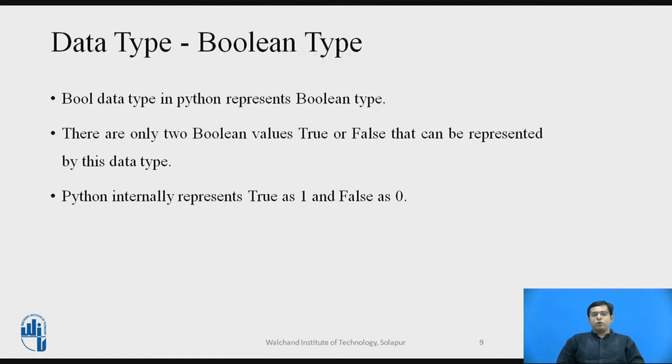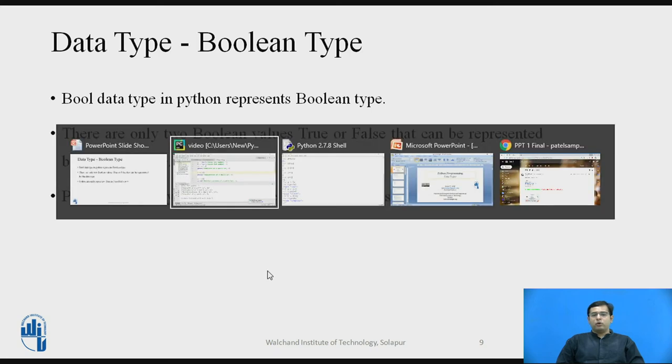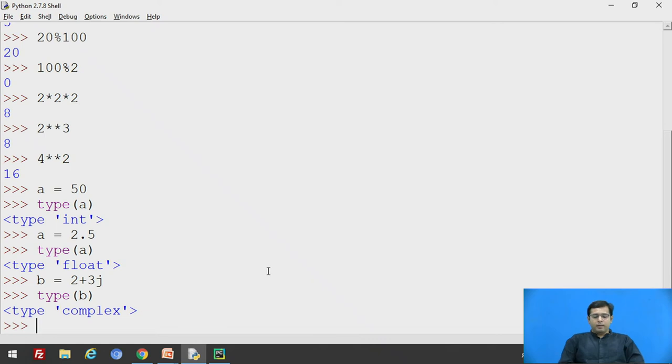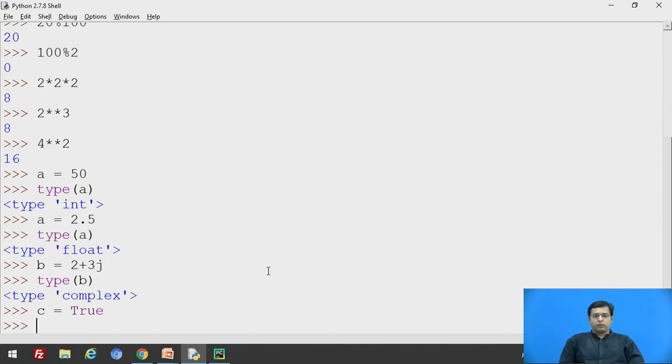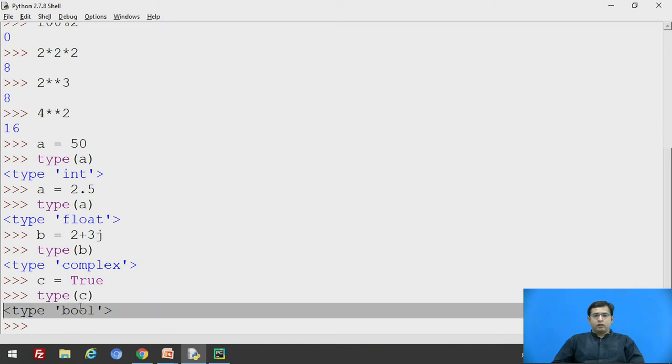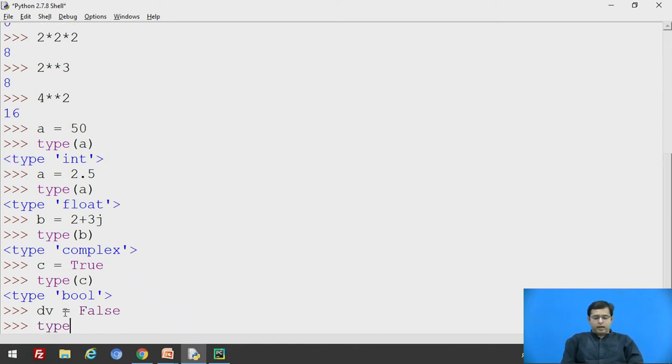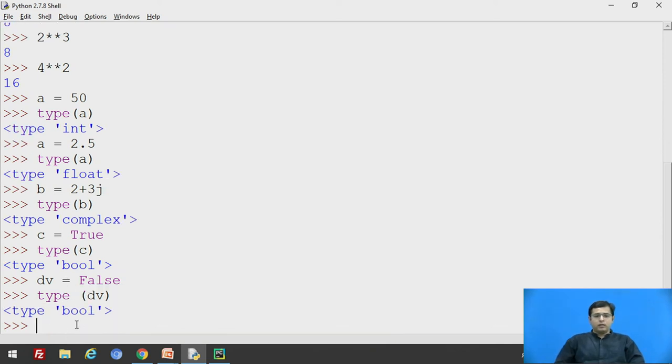Now the second data type is boolean data type in Python. There are two values for boolean, either the value will be true or false. Python internally represents true as 1 and false as 0. We will check this example. Say we assume c is equal to true. We will check the type of c. The type of c is boolean. Here we have to take care that the T and F of true and false respectively should be capital. Now dv is equal to false. Type of dv is again a boolean type.